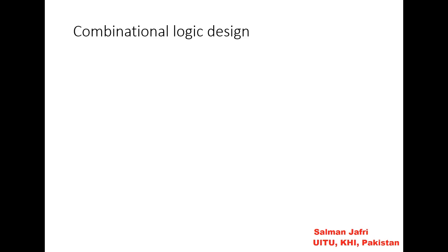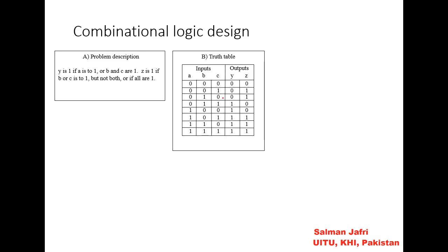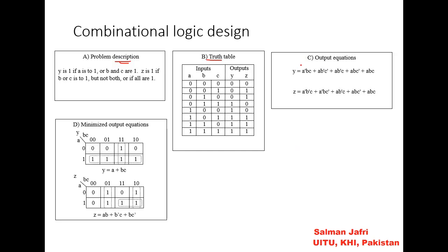Some points about combinational logic design. The design starts with the problem description, which is in English. Y is 1 if A is 1 and B or C are 1, for example, we can write it in English, but not both or all are 1. Then we translate it into basically a truth table. This English statement is translated into the truth table. After that, we write the output equations. It is basically SOP which has been written—sum of products. We can have either SOP or POS. Then we can use the K-maps to find the minimized expressions for the outputs Y and the outputs Z.